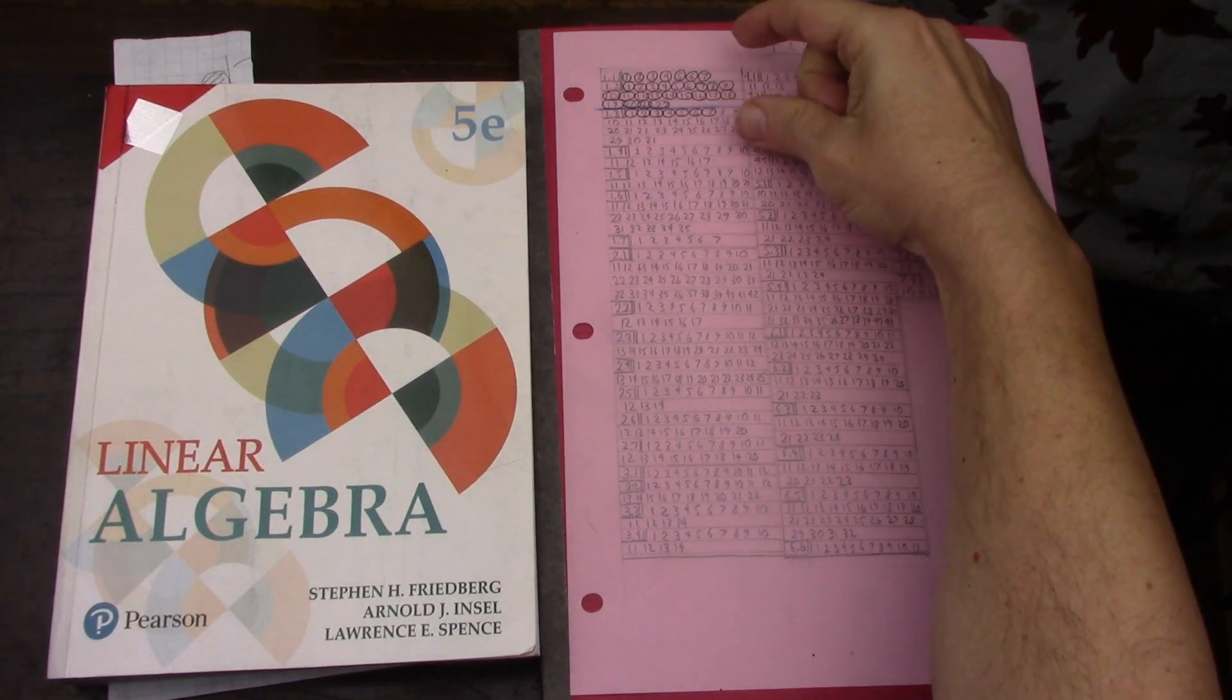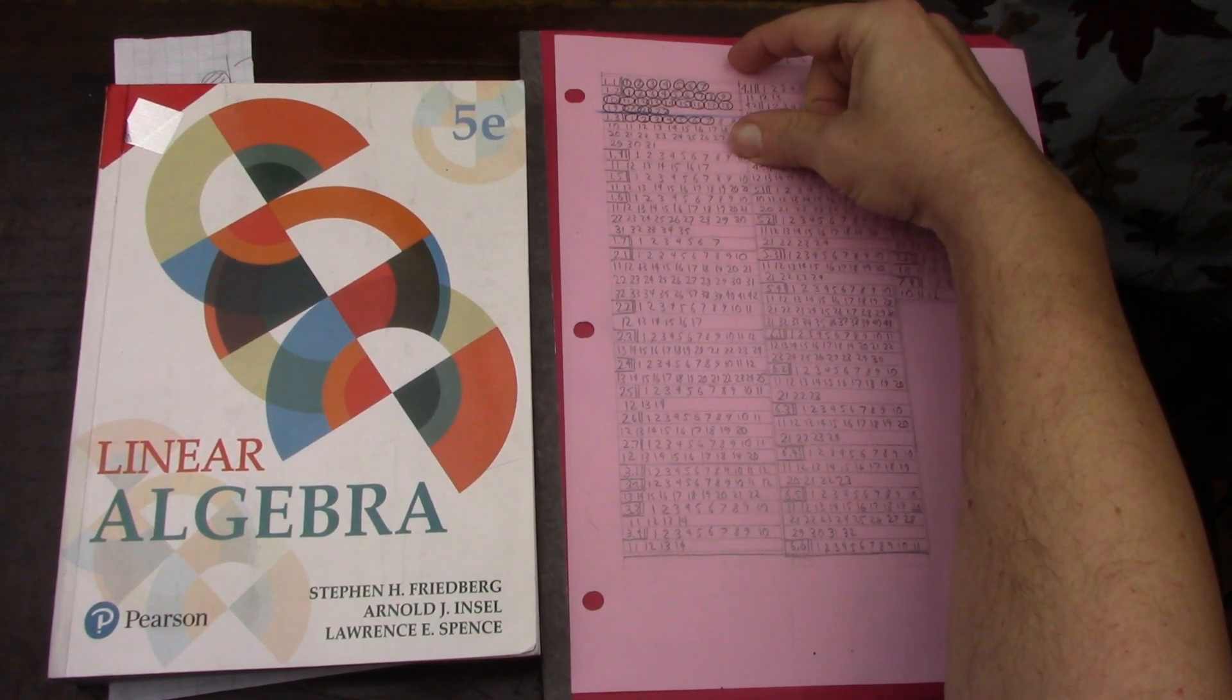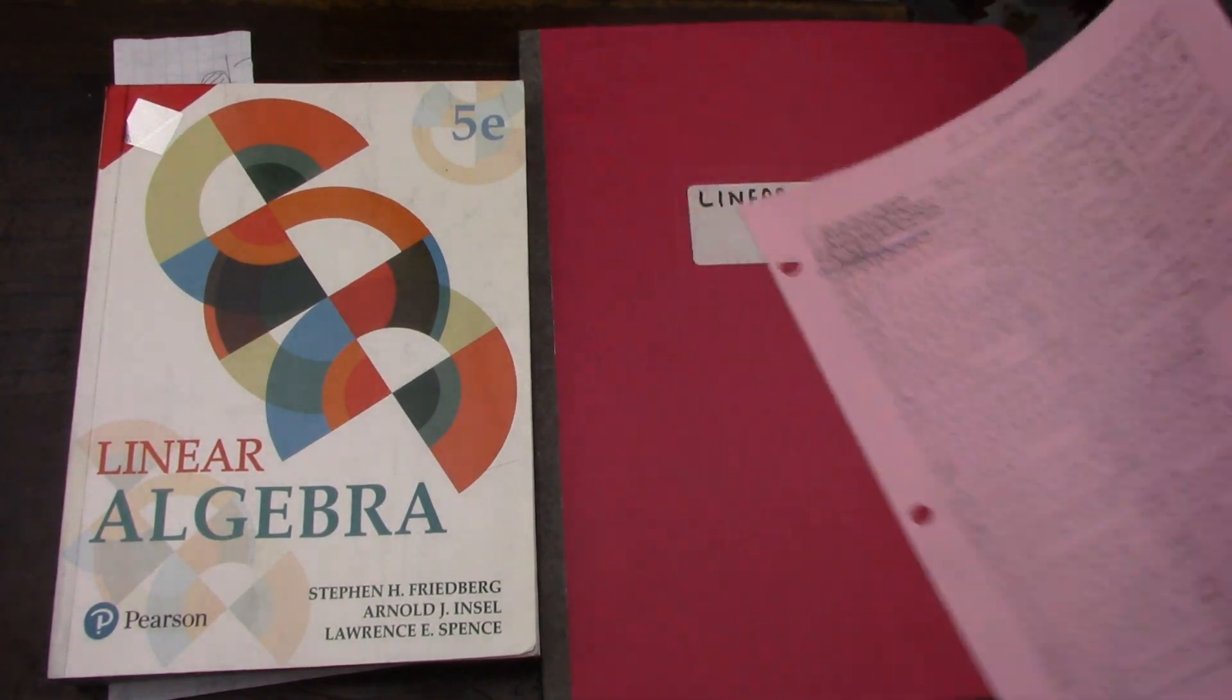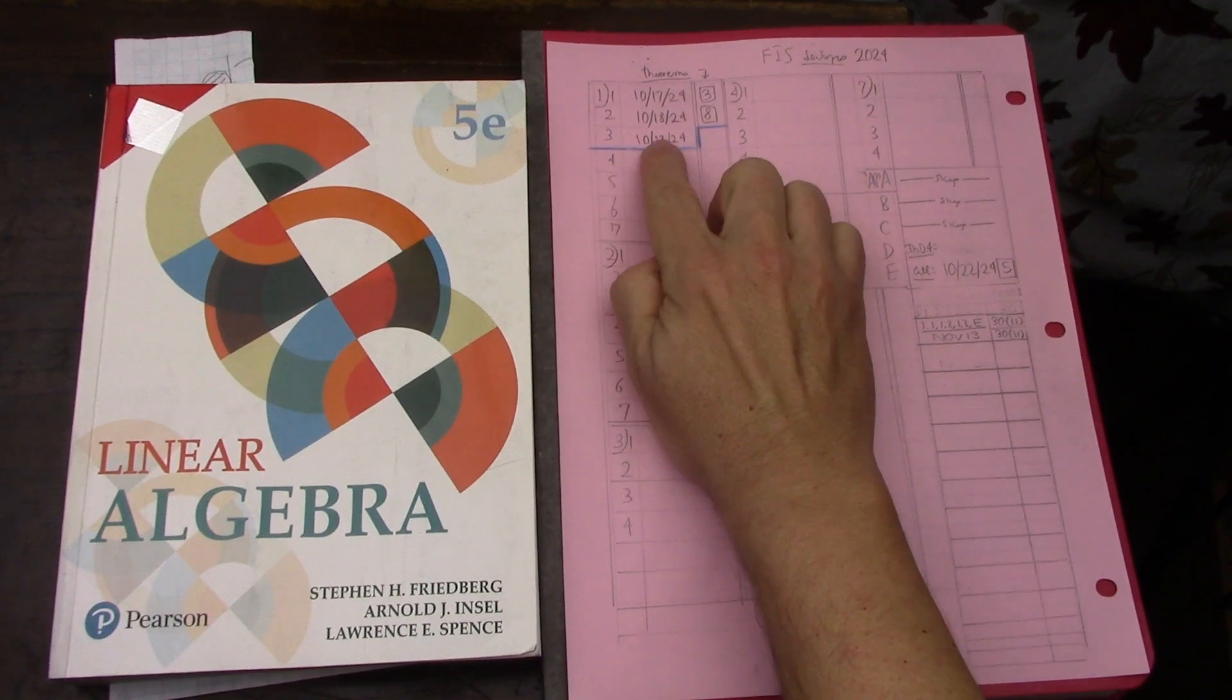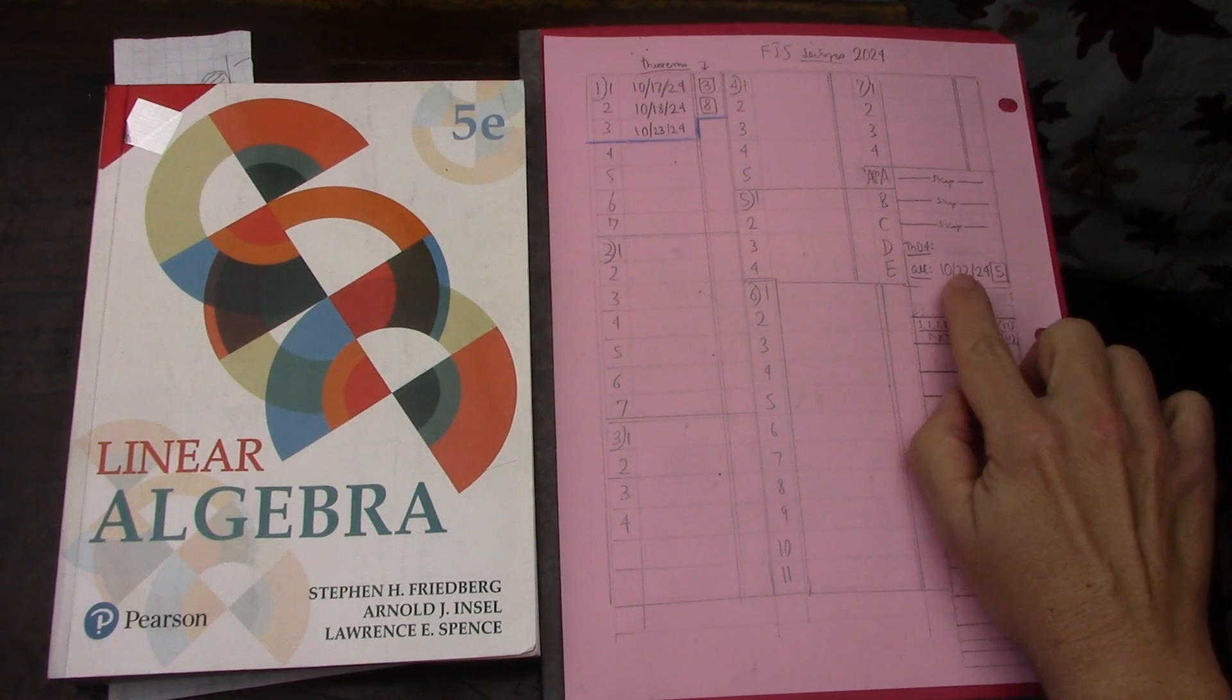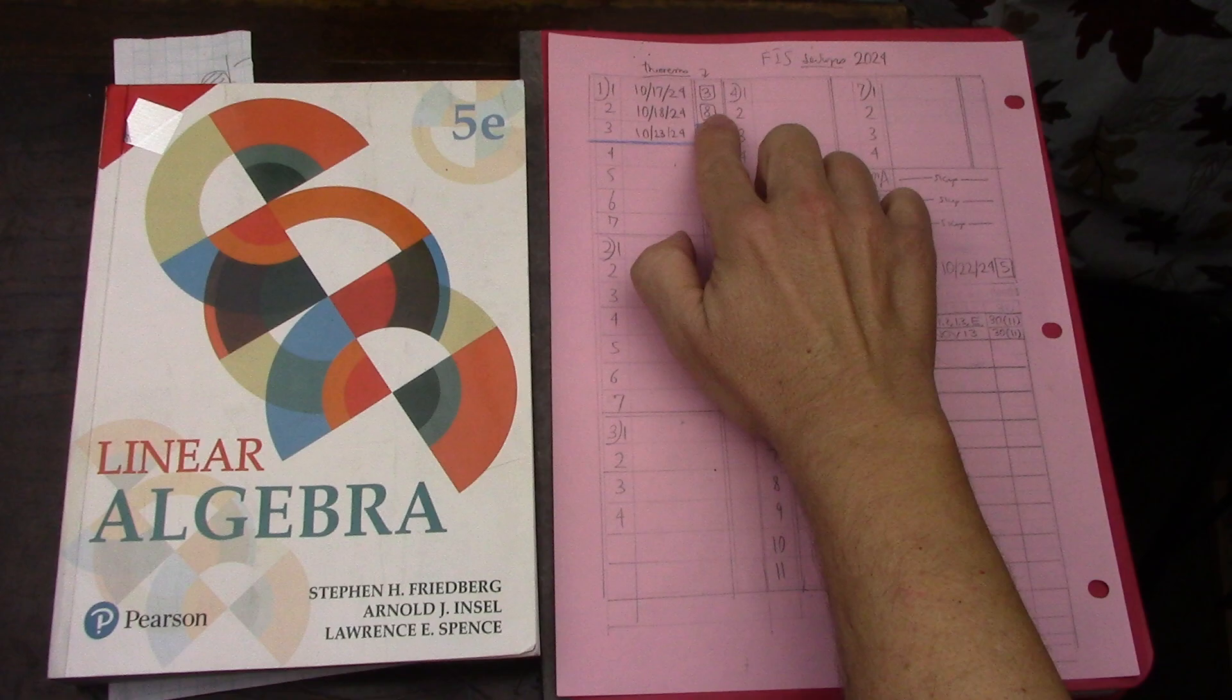This is going to be my first video for FIS or Friedberg, Insel, Spence. I've done two sections very early going for the problems. I've read the first three sections, so I actually did the first two and read the third. Then also worked on Appendix E, which was very long and took forever to work through.